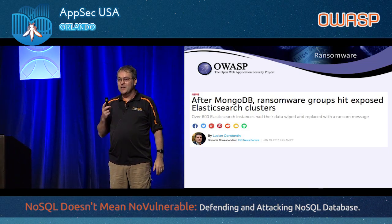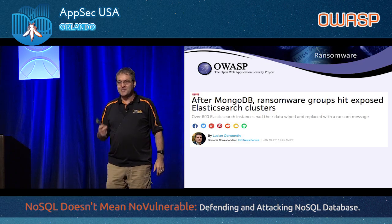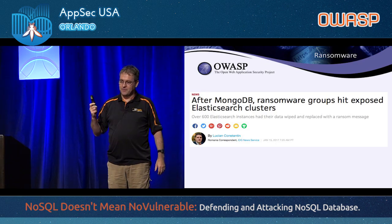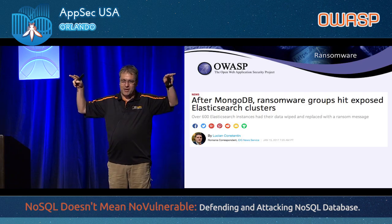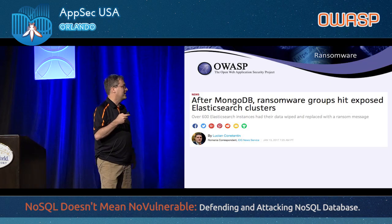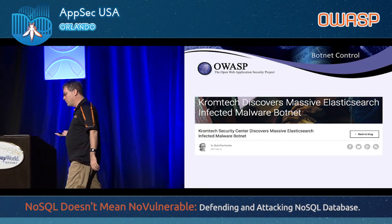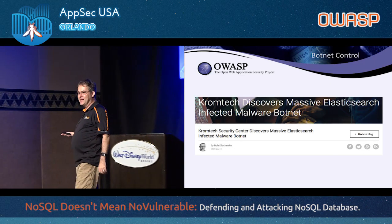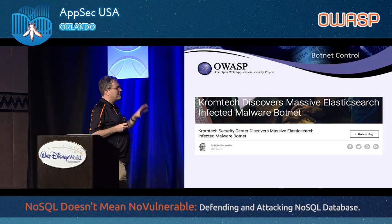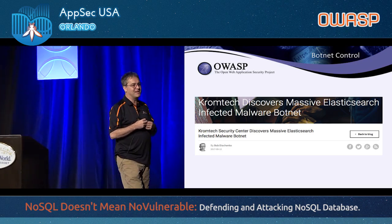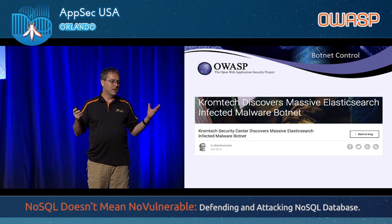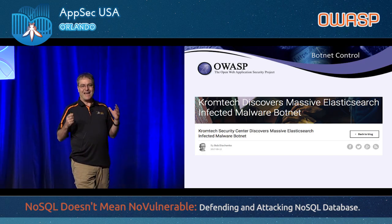In this database ransomware case, they don't actually encrypt your data — they just delete it, then claim they encrypted it and sell you the decryption key. A little variation on the ransomware theme. And just last week, exposed Elasticsearch servers were found — mostly in Amazon's cloud — being used for botnet command and control. So these databases are attacked all the time.